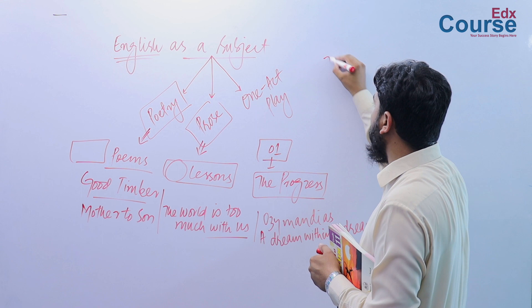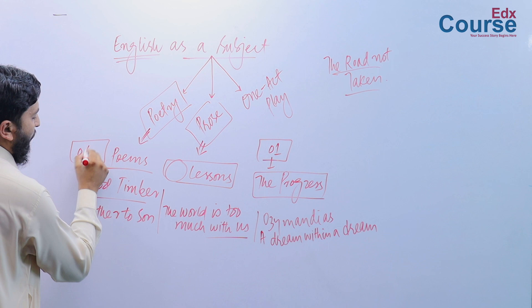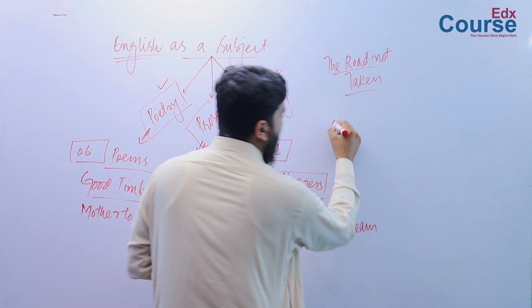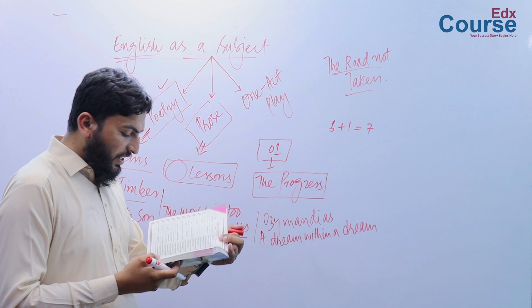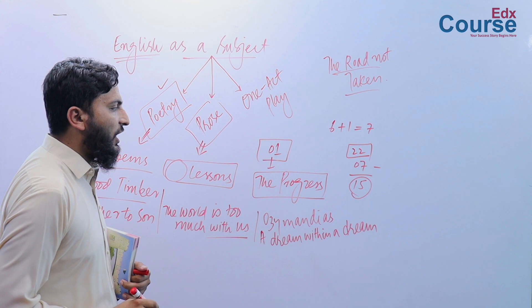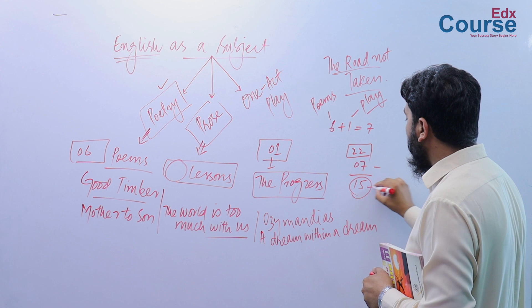Now, counting one, two, three, four, five, six — there are six poems in the poetry section. You must understand that six poems are there, and there is one one-act play, so six plus one is equal to seven. There are 22 lessons total. 22 minus seven is equal to 15. So we must understand that there are six poems, one play which is a short play, and 15 prose lessons, or we call them chapters.